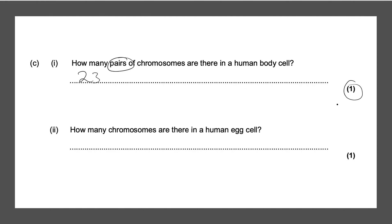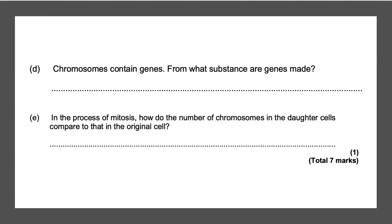Next question: how many chromosomes are there in a human egg cell? This is to confuse you — a human egg cell is a haploid cell, so it would only contain 23 chromosomes overall. That gives you one mark. Our next question: chromosomes contain genes — from what substances are genes made? Genes are made from DNA, strands of DNA, and that gives you your one mark.